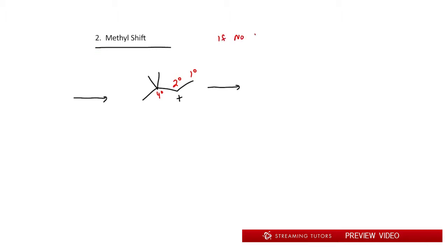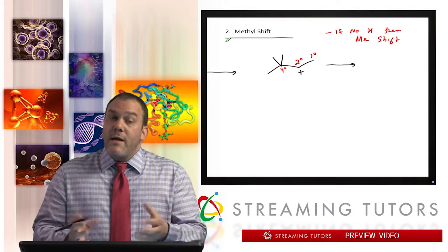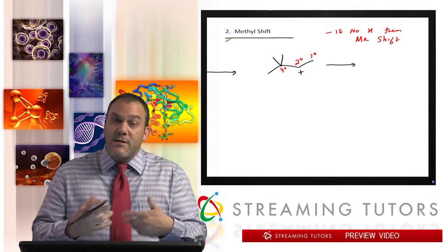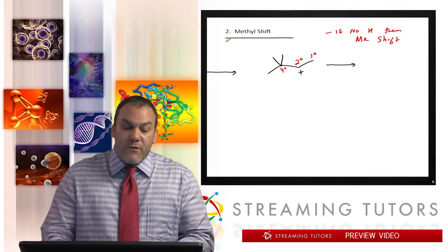If there's no H's, if no H, then methyl shift. We shift the next smallest group. See, here's the logic: an H is very small, its bond is easy to break, and because of how small it is, it's easy, it's energetically favored to do that. But if there is no H, methyl's next up. A methyl is easy to shift because it doesn't require as much energy as a bigger group. So that's why we do a methyl shift.